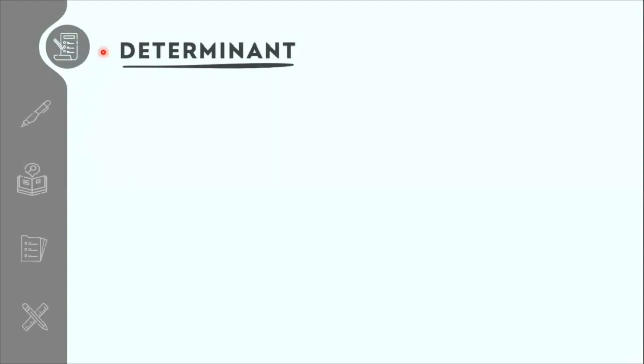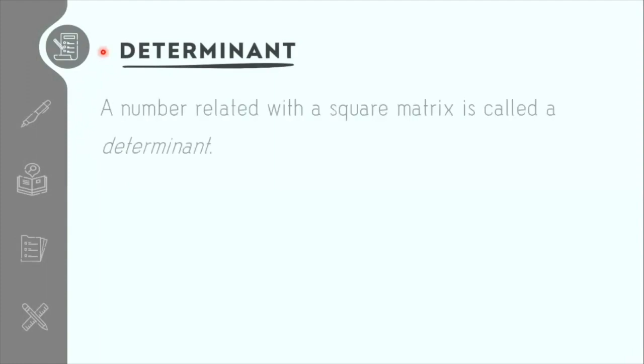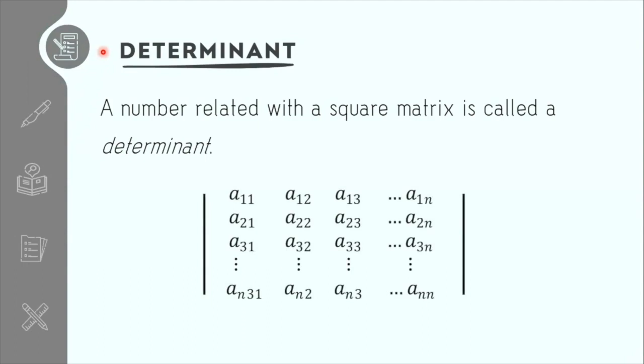So what is a determinant? A determinant is a number, a scalar quantity, that is related with a square matrix. Therefore, in this topic, we will only be dealing with square matrices in solving for the determinant.